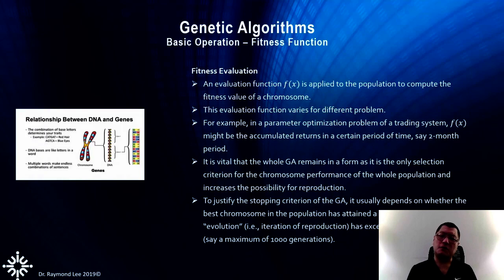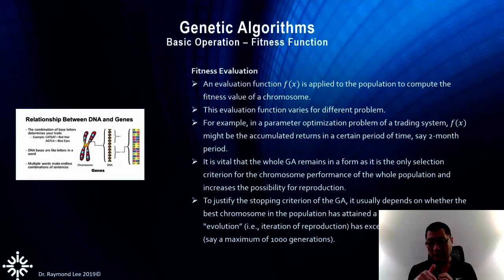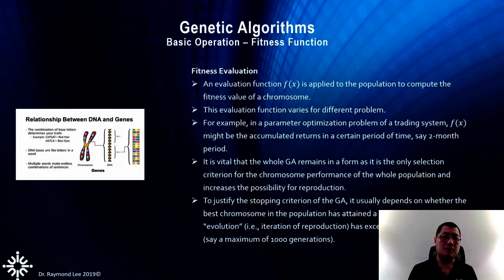For stopping criteria in GA, you have to set a threshold — controlled by two factors: either your evaluation result (e.g., when fitness score exceeds 85%) or a maximum number of generations (e.g., 1000). You should always set both, because for some systems no matter what you do, you cannot attain 85%. If you don't set the maximum number of generations, your system will never end. This doesn't mean there's a problem — it just tells you there is a natural limitation for further improvement.